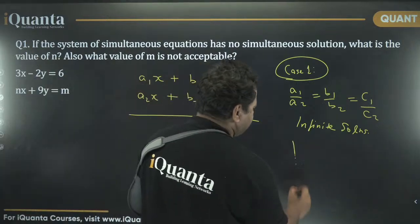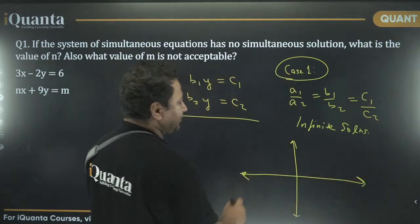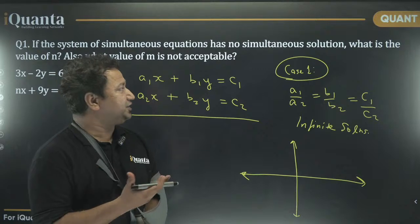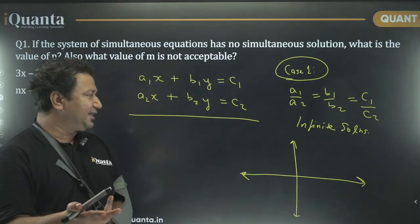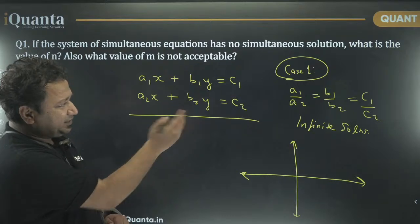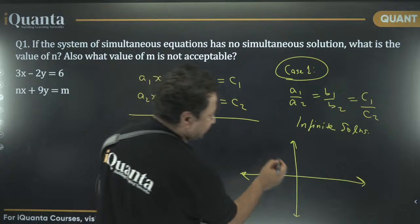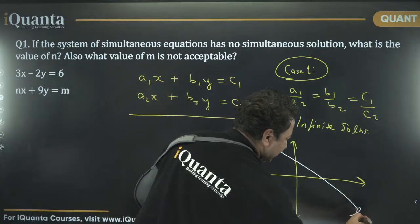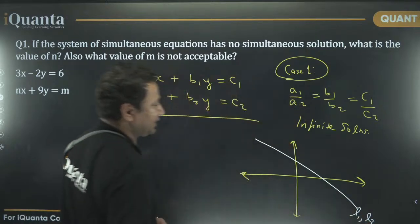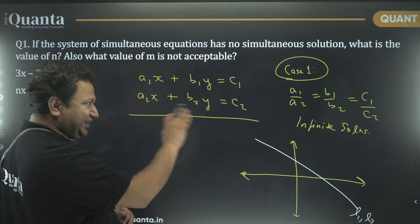Graphically speaking, the two lines will be intersecting over each other. By the way, what is solution? The solution is basically the intersection, the point of intersection of two straight lines. But here, in case 1, both the lines are same. So, they will be overlapping with each other. If this is the first line, the second line will also be lying on this only. Line 1 and line 2, both will be same. That is the graphical interpretation.